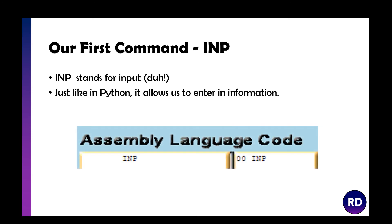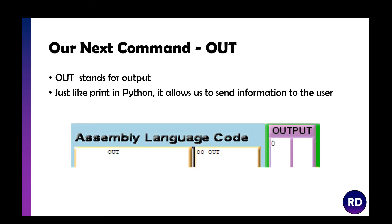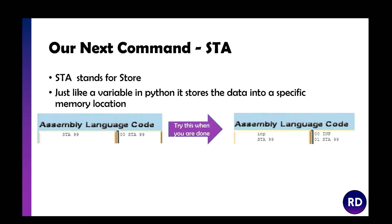The first command is INP which stands for input. Just like in Python, it allows us to enter in a number. Next is OUT which stands for output — just like print in Python, it allows us to send information to the user via the output tray. If nothing is programmed in the accumulator, OUT will output 0.